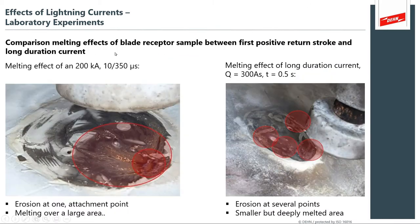Here are images comparing the melting of the blade receptor from first strokes versus long-duration events. The primary stroke — what we call the 10 by 350, 200 KA event — creates erosion and melting. But from the low-amplitude event, the tremendous charge delivered over that comparatively long time interval produces smaller but deeply melted areas and erosion pitting throughout the test unit.